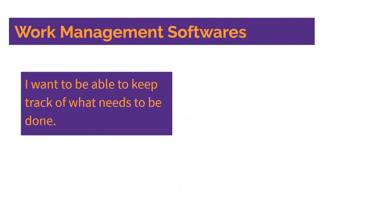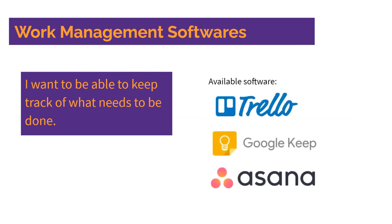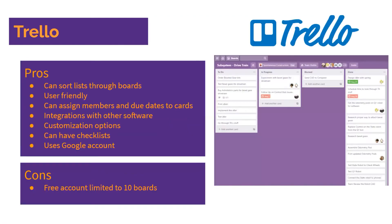Next, we'll talk about different types of work management software. Our goal as a team was to keep track of what needs to get done so we can do it in a timely manner. The three we'll cover are Trello, Google Keep, and Asana. Trello is the software our team mainly uses, since we found it first and have found it very convenient.